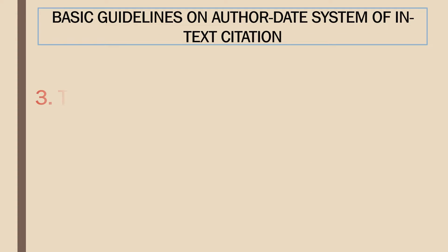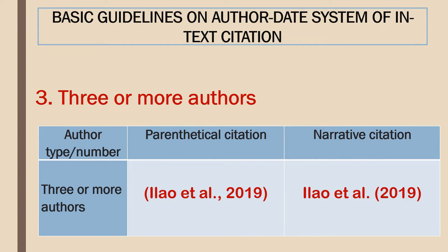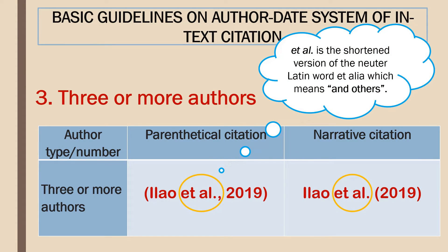Three authors or more: if there are three authors or more in a single academic work, cite the lead author and use et al. right after the surname of the first author. Et al. is the shortened version of the Latin phrase et alia, which means and others.